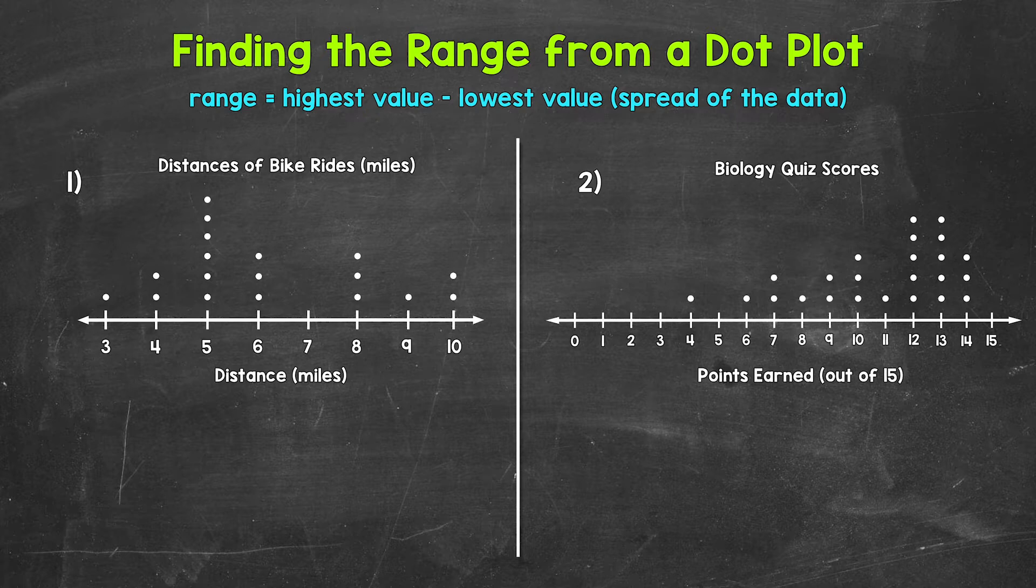Let's jump into our examples, starting with number one, where we have a dot plot displaying data about bike ride distances. Let's say that a person tracked the distance of their bike rides for a month. Here are the results.